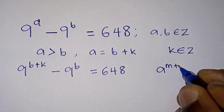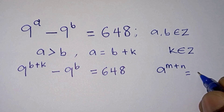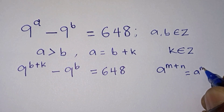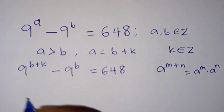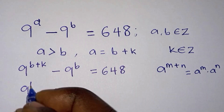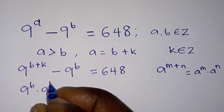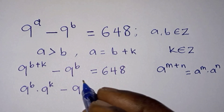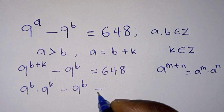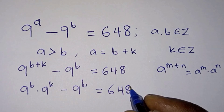Let's apply the power rule, which says that a to the power m plus n is the same as a to the power m times a to the power n. So we can write this as 9 to the power b times 9 to the power k, minus 9 to the power b, is equal to 648.